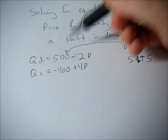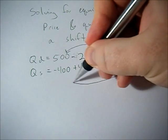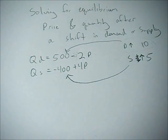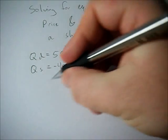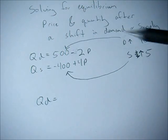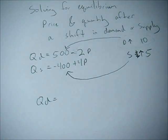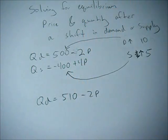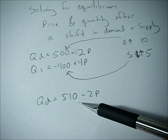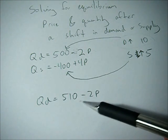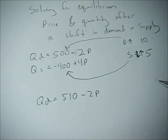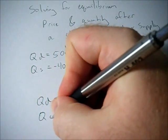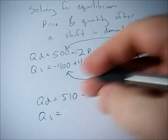It's really as simple as that. So our new functions are going to be Qd, and instead of 500 it's going to be 510 minus 2P. That makes the intercept larger and shifts out the demand curve. With the supply, we also add the value because it's an increase in supply, so now we have a smaller negative number, negative 395 plus 4P.